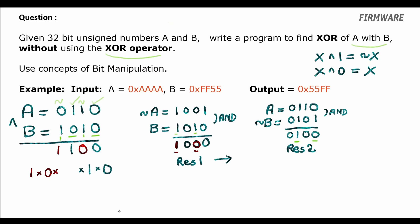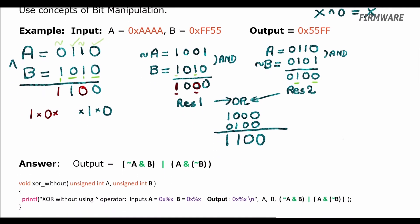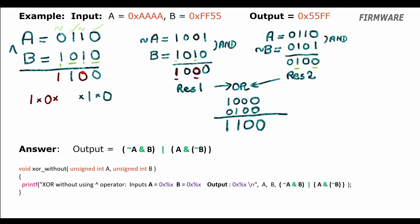Okay, so we have 1000 OR with 0100, so the final result is 1100. This is great. So to solve this problem we used inversions AND operations also OR operation. All right, combining them all we have output equal to inverted A AND B OR with A AND inverted B. This is our required solution.